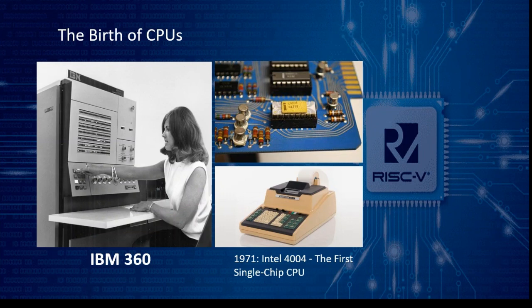The birth of CPUs: the earliest CPUs, such as the IBM 360 mainframe, were huge complex machines made up of thousands of parts. But in 1971, Intel changed everything with the Intel 4004, a single-chip 4-bit CPU that revolutionized handheld calculators. This was a leap towards compact and powerful computing.